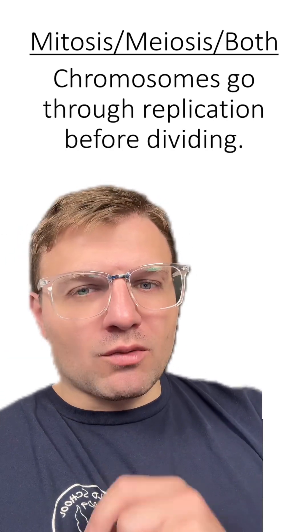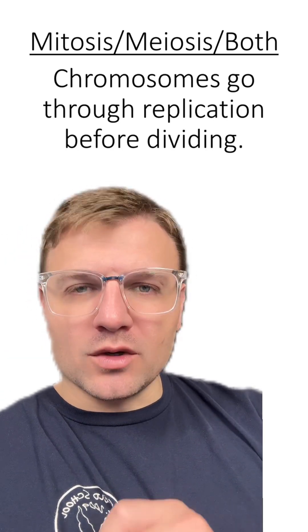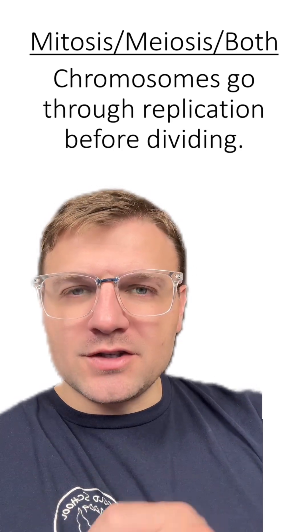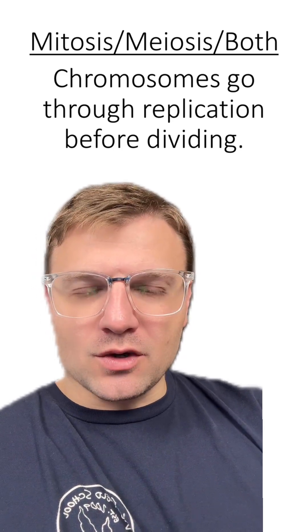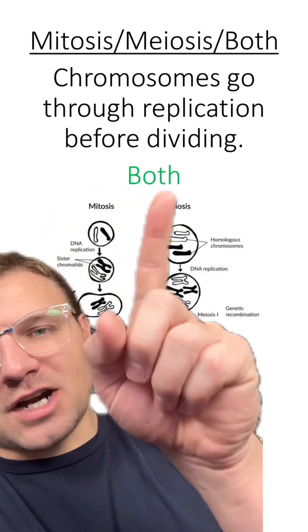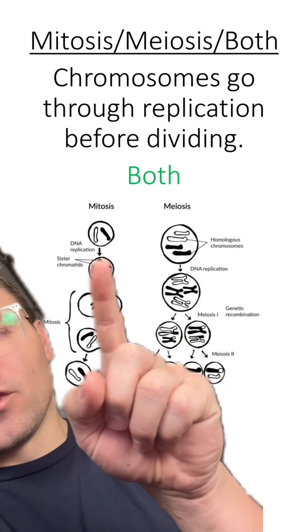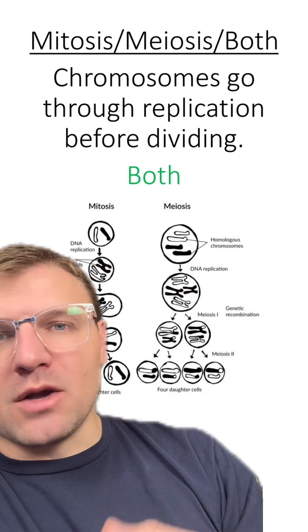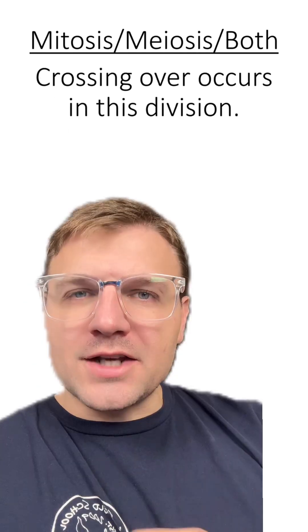Chromosomes go through replication before dividing. Does this describe mitosis, meiosis, or both? This describes both. Before mitosis and meiosis, the cell will go through DNA replication.